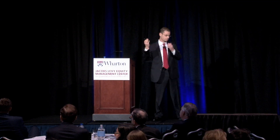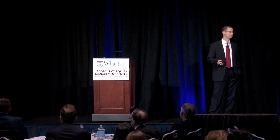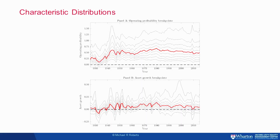This shouldn't be surprising — the world changed, and it changed a lot over the 20th century. These two pictures show temporal variation in the cross-sectional distribution of the underlying characteristics behind the profitability and investment factors — decile breakpoints for each characteristic over the last 100 years. Not just the first moment, but higher-order moments are changing over time. You would expect factor premia to potentially change for a variety of reasons, and the second half of the paper tries to take this variation seriously to distinguish potential explanations.